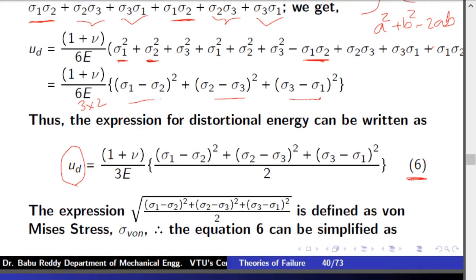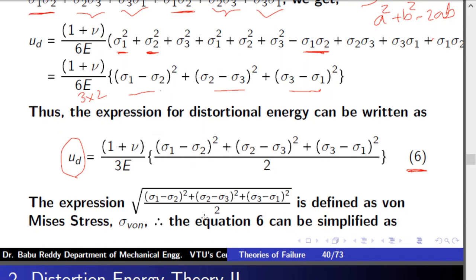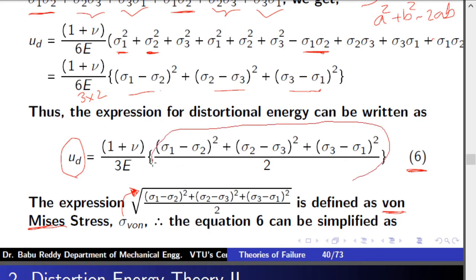We now define what is known as the von Mises stress (note: the 'v' in von Mises is lowercase). The von Mises stress sigma_vm is defined as: sigma_vm = sqrt[(sigma1 − sigma2)² + (sigma2 − sigma3)² + (sigma3 − sigma1)²] / 2. Using this definition, the distortion energy expression can be written compactly as: u_d = (1+nu)/(3E) × sigma_vm². This shorter form using von Mises stress is more convenient, and the distortion energy can be expressed either as equation 6 (in terms of sigma1, sigma2, sigma3) or in the compact form using sigma_vm.